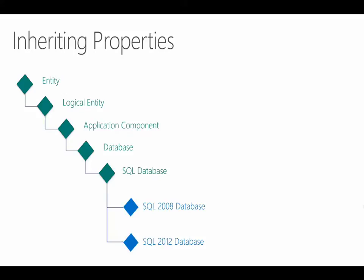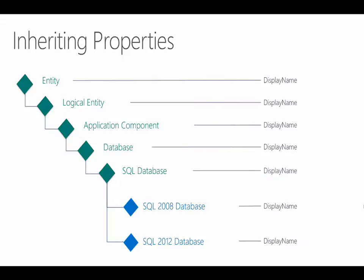Now let's look at properties. If you go to the system library MP and look at the entity class definition, you'll see it has a single property: display name. Since logical entity inherits from entity, it inherits that property — same for application component and so on up the tree. Since every single class eventually inherits from entity, every single class has that display name property. Until you get to SQL database, which has several additional properties. And because SQL 2008 and 2012 inherit from SQL database, they inherit those properties as well.